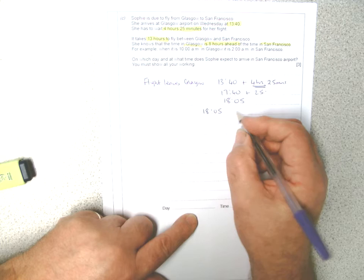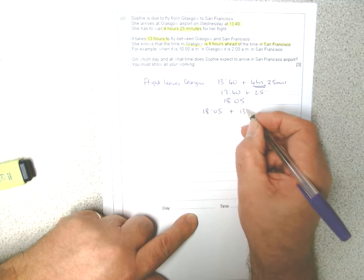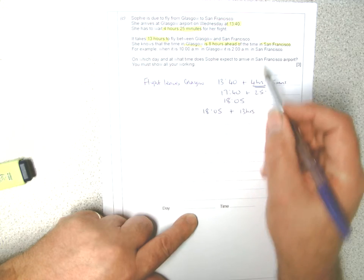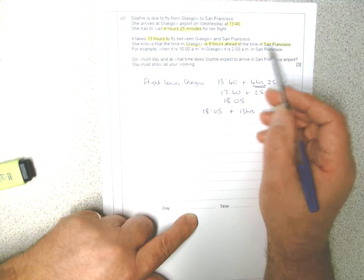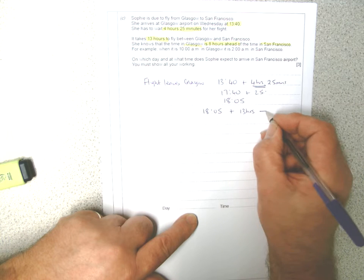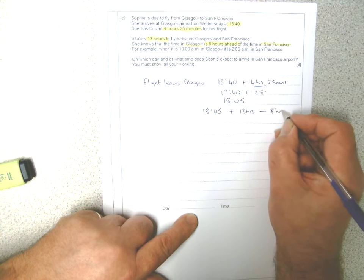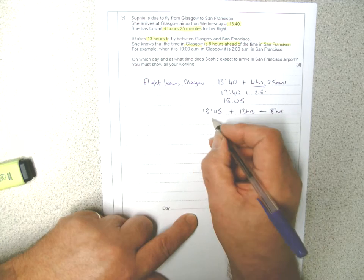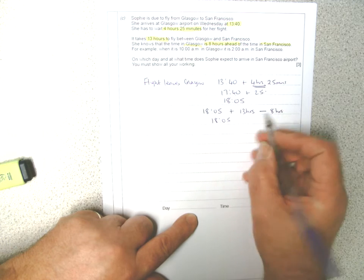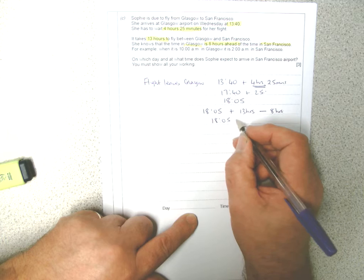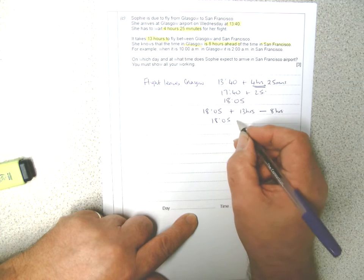So this flight leaves at 1805, it's going to take 13 hours, but because San Francisco is eight hours behind Glasgow, the time then will be eight hours less. So it's actually five hours later in San Francisco time.